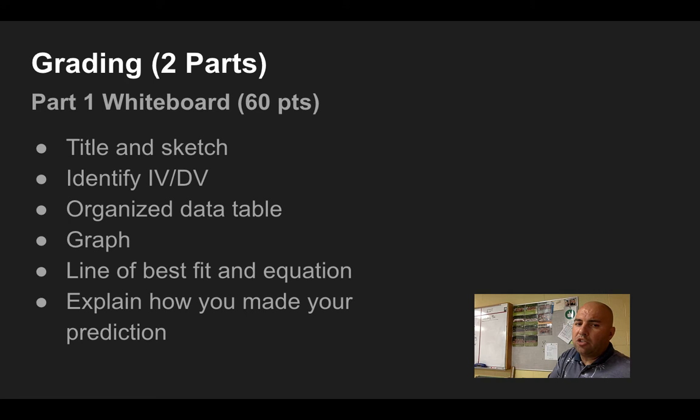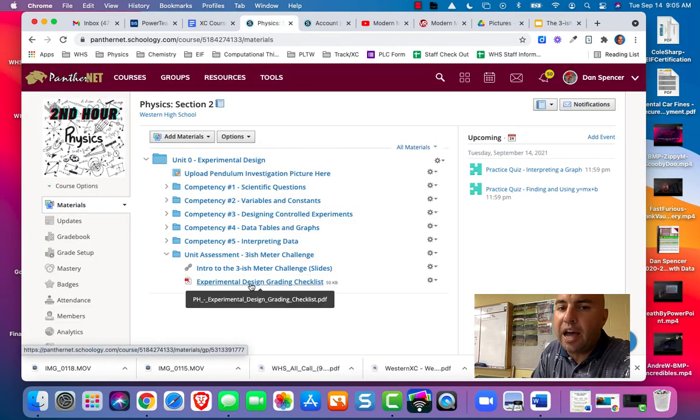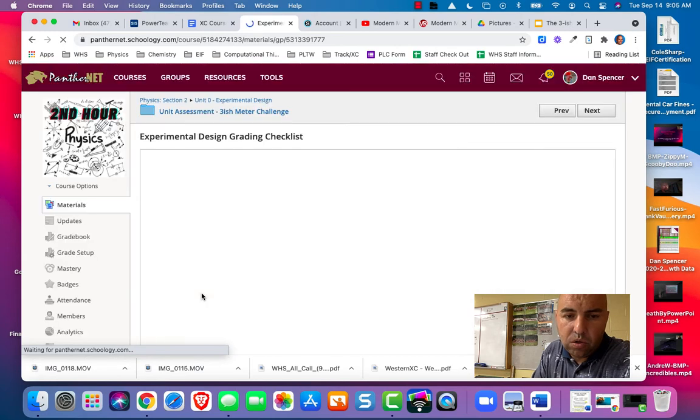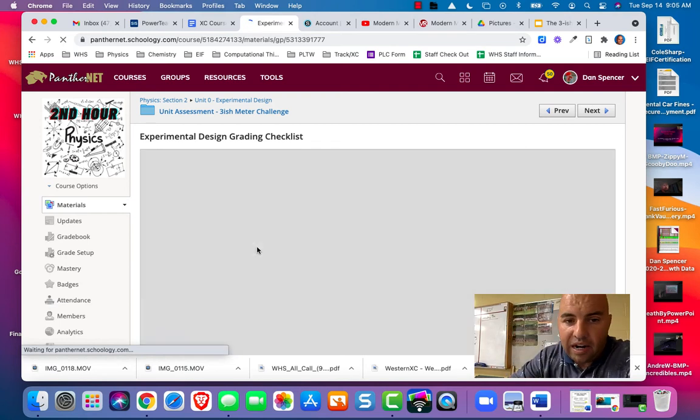Here's how you're going to grade. It's going to be a total. There's two parts. There's going to be a total of a hundred points. The first part is the data collection. And that is worth 60 points. And you're going to need to have a title and a sketch of the setup. You're going to need to be able to identify the independent and dependent variables. You're going to need to organize your data table. You're going to need a graph. You're going to need a line of best fit in the equation. You're going to need to explain how you made your prediction. You're going to need to do all of those things. In fact, if you go into Schoology and open up this experimental design grading checklist, what it does is it shows you how everything is graded.